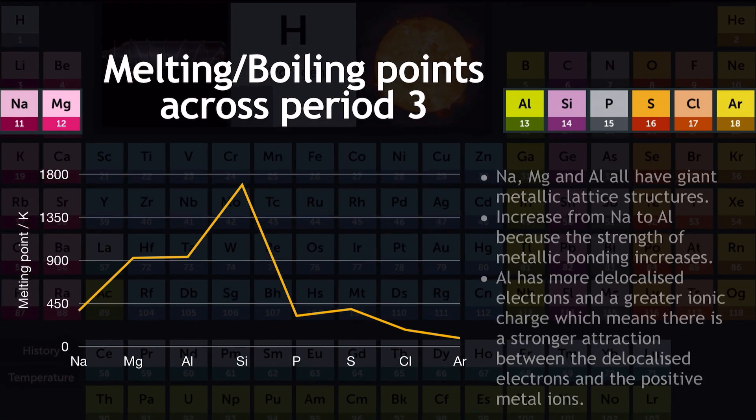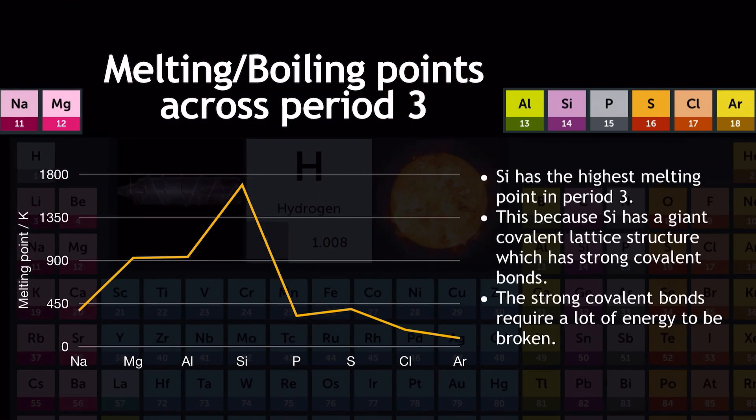Moving on to silicon, which has the highest melting point in period 3. This is because silicon has a giant covalent lattice structure with strong covalent bonds extended throughout. In order to melt and boil silicon, you need to break these covalent bonds — they are very strong and require a lot of energy, which explains silicon's really high position on the graph.